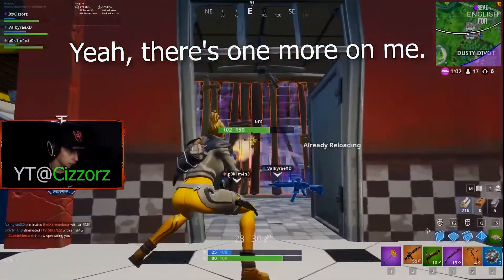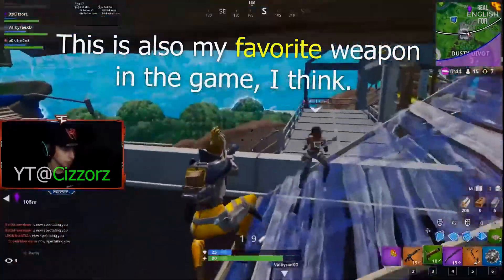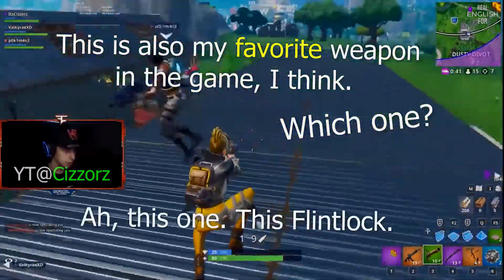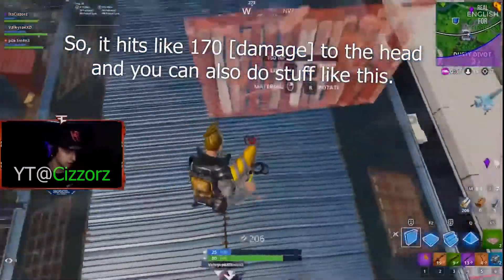Yeah, there's one more on me. I've got him weak and trapped in a box. This is also my favorite weapon in the game, I think. Which one? This one, this flintlock. Because it hits like 170 to the head and you can also do stuff like this.